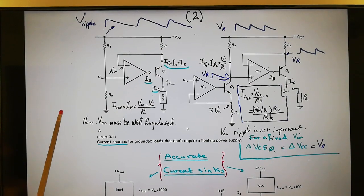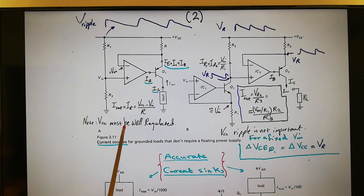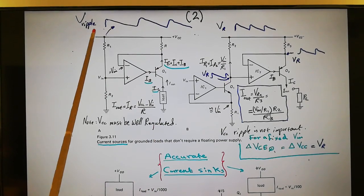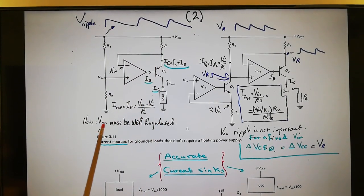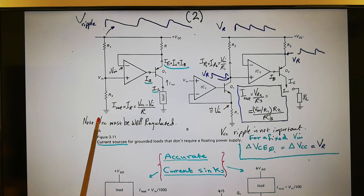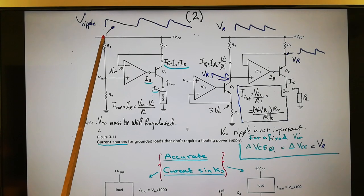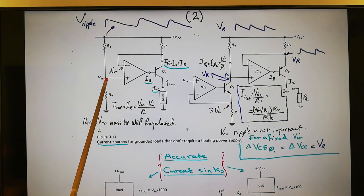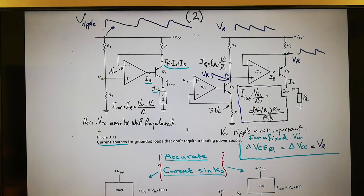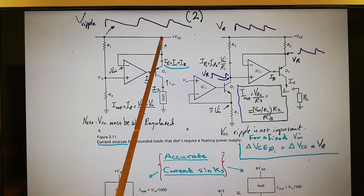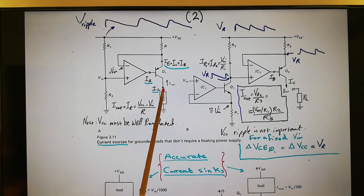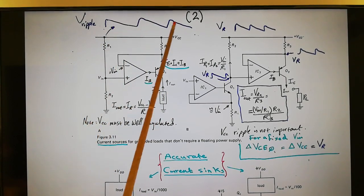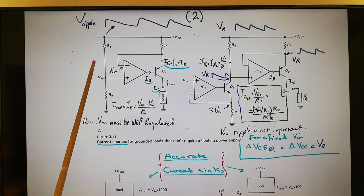The problem with this circuit is that VCC must be well regulated. Any ripple on VCC will appear as a ripple current across the load, because a fraction of that ripple voltage on VCC will be presented at the input and also across R, causing the load current to increase and decrease according to that ripple divided by R.